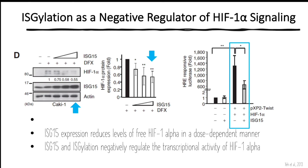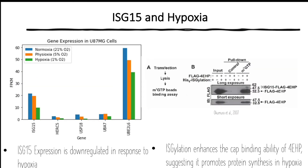This RNA sequencing data in glioblastoma cells shows that ISG15 expression is downregulated in response to hypoxia. 4EHP has been identified as an alternative translation initiation factor in hypoxia. Thus, ISGylation has been shown to enhance the cap-binding ability of 4EHP, suggesting it promotes protein synthesis in hypoxia.